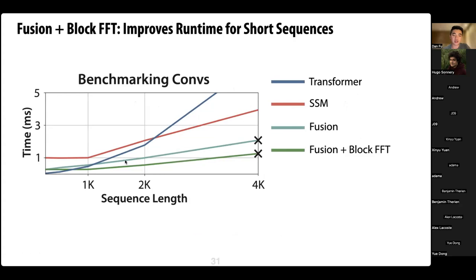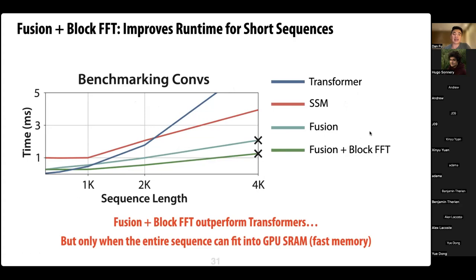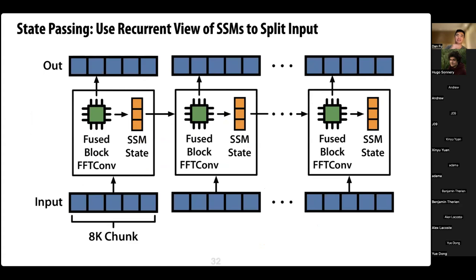Kernel fusion reduces memory I/O and gives a speedup for sequences fitting into SRAM. The block FFT further improves runtime for short sequences by better utilizing GPU FLOPs. However, both fusion and block FFT can only outperform transformers when the entire sequence fits into GPU SRAM — roughly up to 4k or 8k on A100s. Since our whole motivation was scaling to longer sequences, capping at 4k isn't sufficient.